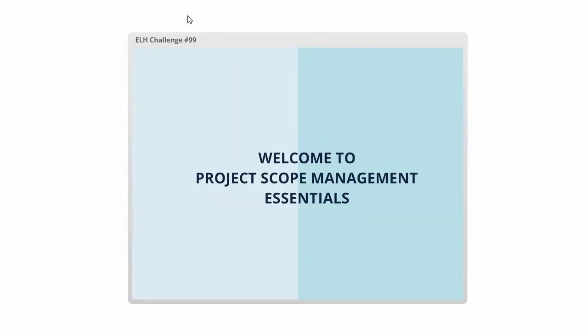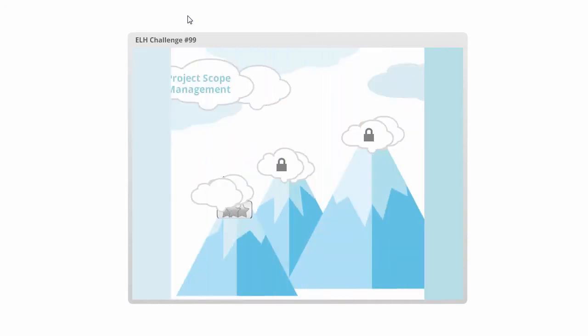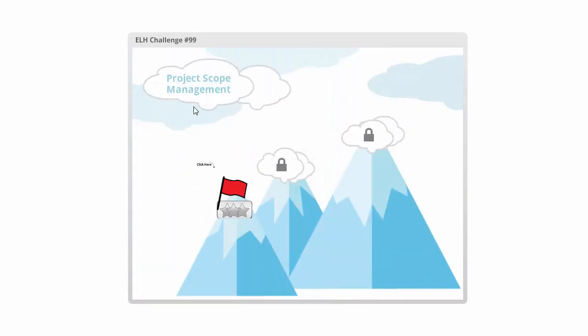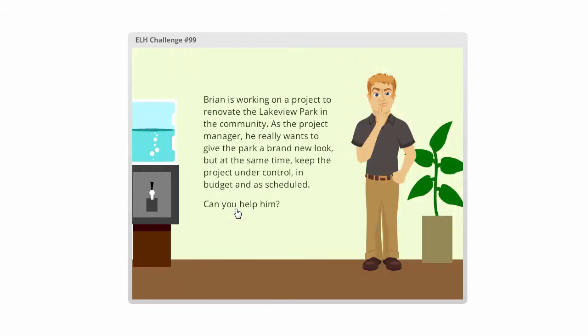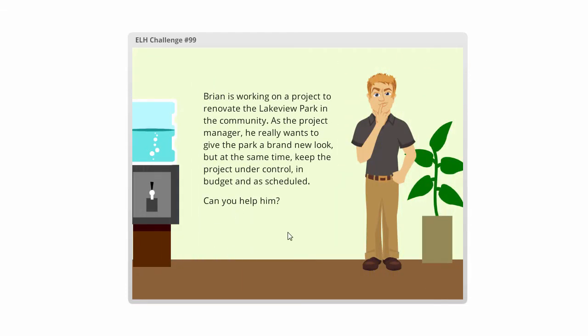This next example is from Dongsue, who shared his project scope management essentials — a cool example of scenarios as well as gamified elements. You actually have to complete a first level before you can move on to additional levels. Basically you're given a series of interactions, answer them correctly, and you're able to move on through each chapter. Really like that approach. Really cool example this week.